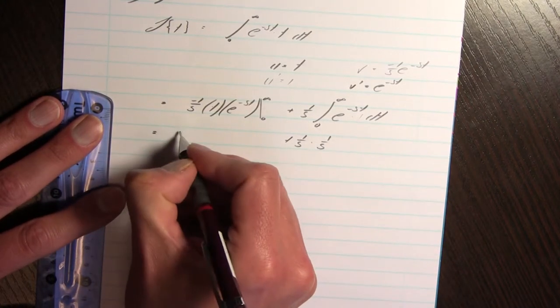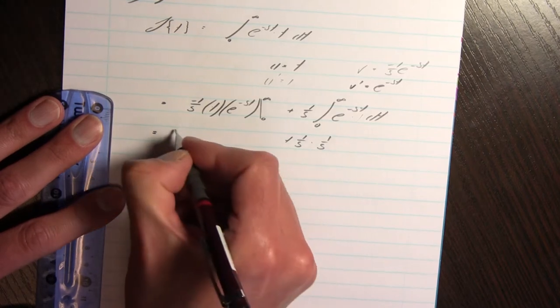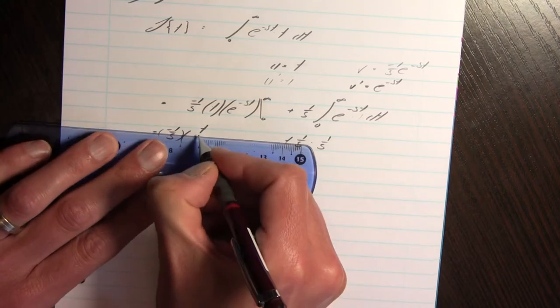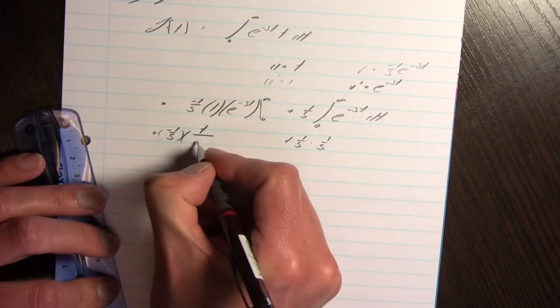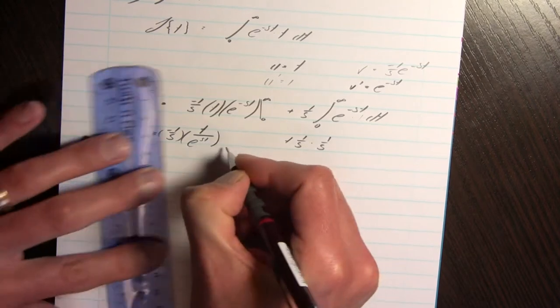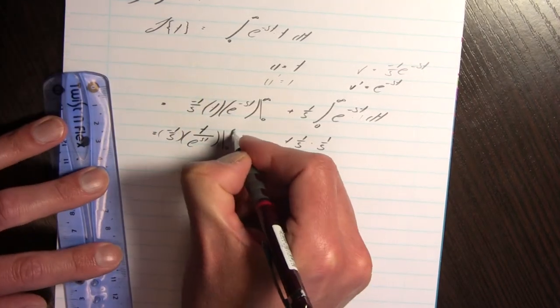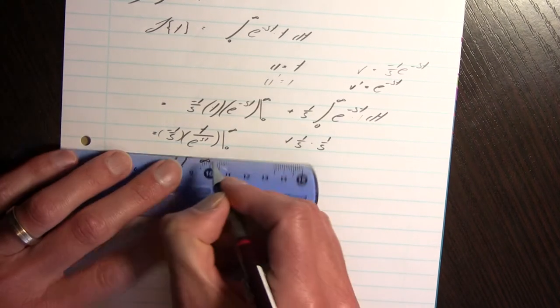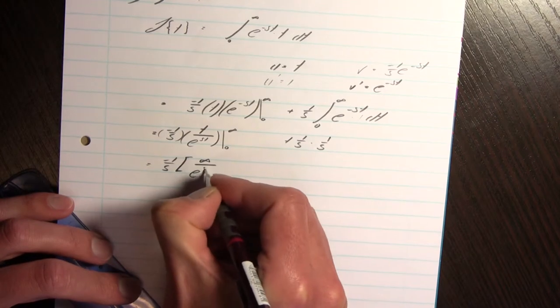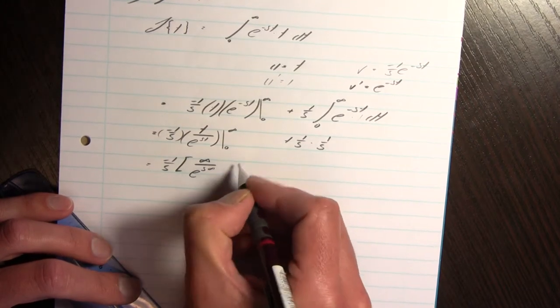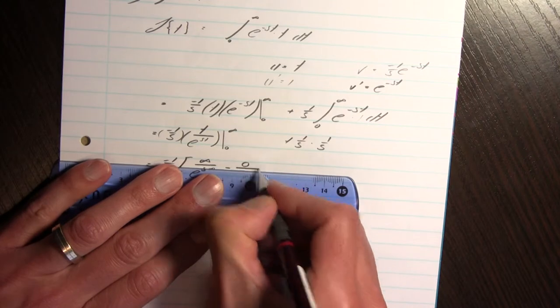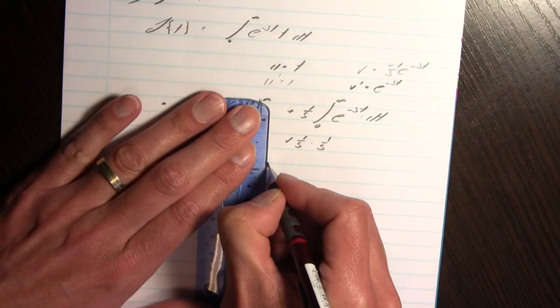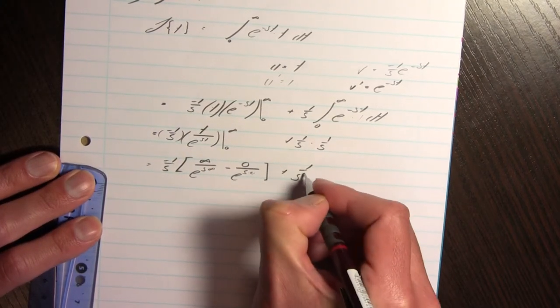Let's do this side though. It's going to be negative 1 over s times t over e to the power st going from 0 to infinity. So let's do that. That is negative 1 over s. So what are we going to have? We're going to have infinity over e to the power s times infinity minus 0 over e to the power s times 0. We have that plus 1 over s squared.